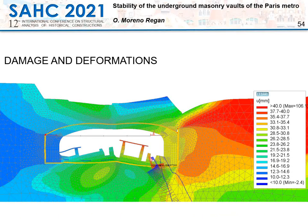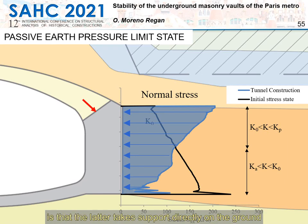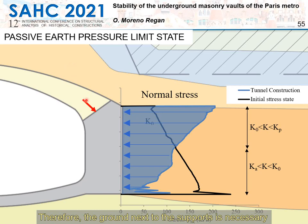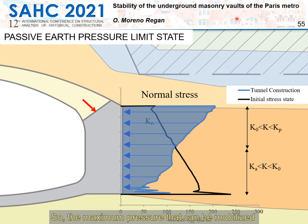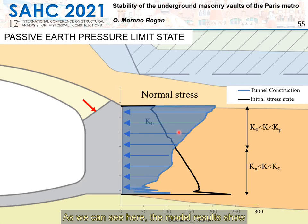Let's talk about the analysis of the earth pressure limit state. The difference between a masonry vault of a building — a church, for instance — and an underground masonry tunnel is that the latter takes support directly on the ground. As it turns out, the ground is at the same time its support and its load. Therefore the ground next to the support is necessary to balance the thrust generated by the vault, so the maximum pressure that can be mobilized within the soil is an important property for ensuring stability.